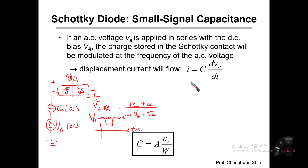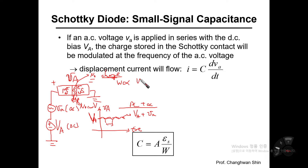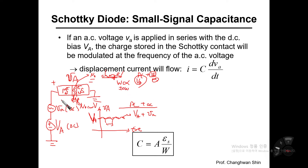Across the MS diode, there is a depletion layer. This depletion layer means there are no carriers — no carriers means no charged particles, meaning no charge here. This depletion layer width W is very dependent on how much DC voltage has been applied. On top of the DC voltage, we apply a small AC voltage, so the depletion width would become wider and narrower depending on the polarity of the AC voltage signal — plus or minus delta W — meaning the depletion layer width is slightly modulated.